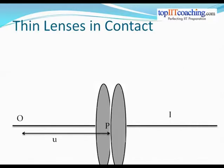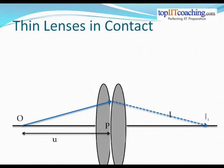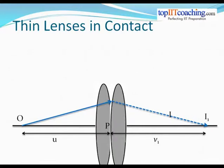If two thin lenses are placed in contact with each other, what will be the focal length of the combined two-lens system? To find that out, let's have an object at a distance u from the pole P. This distance u is assumed to be from both lenses because the lenses are very thin, so there is no difference between the distance of O from the first or second lens. The light ray from object O will travel through the first lens and an image I1 will be formed. Note that this is not the final image — it is the image formed after refraction from the first lens only. The distance of this image from the lens system is taken to be v1.